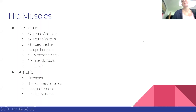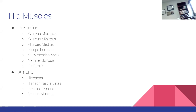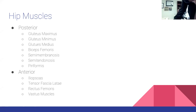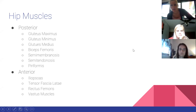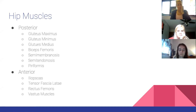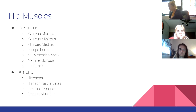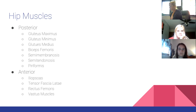The second presentation covers lower extremity muscles. For hip muscles, the posterior group includes: gluteus maximus, gluteus minimus, gluteus medius, biceps femoris, semimembranosus, semitendinosus, and piriformis. The anterior group includes the iliopsoas, tensor fasciae latae, rectus femoris, and the vastus muscles.